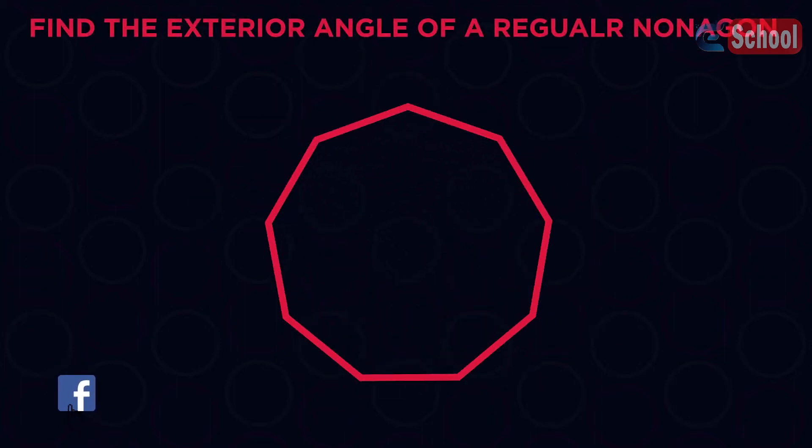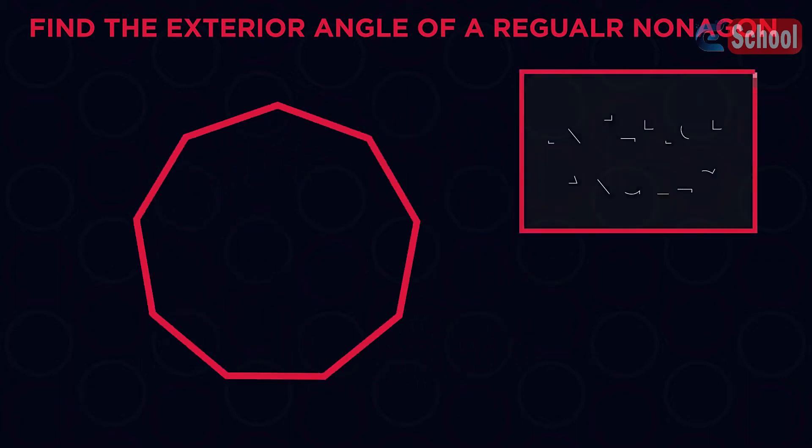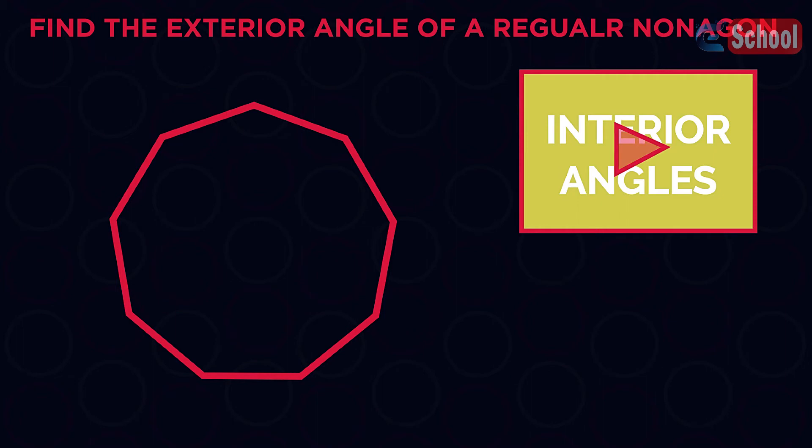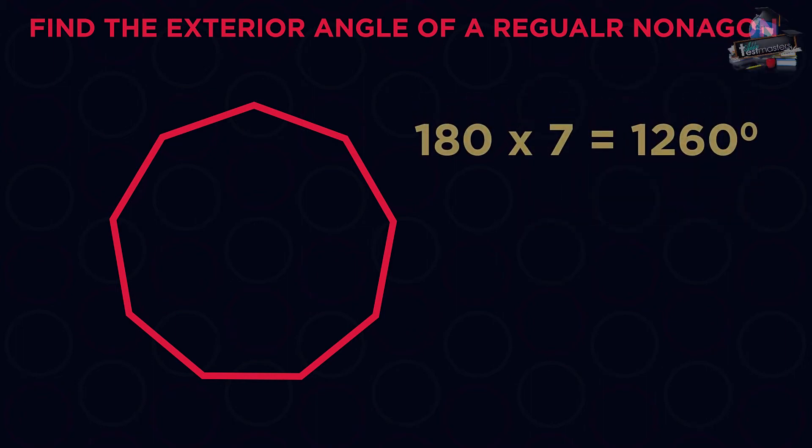What's the exterior angle of a regular nonagon? This is where we need to know about interior angles first. So you may want to watch this video. Start by finding the sum of interior angles. Nine sides means seven triangles.